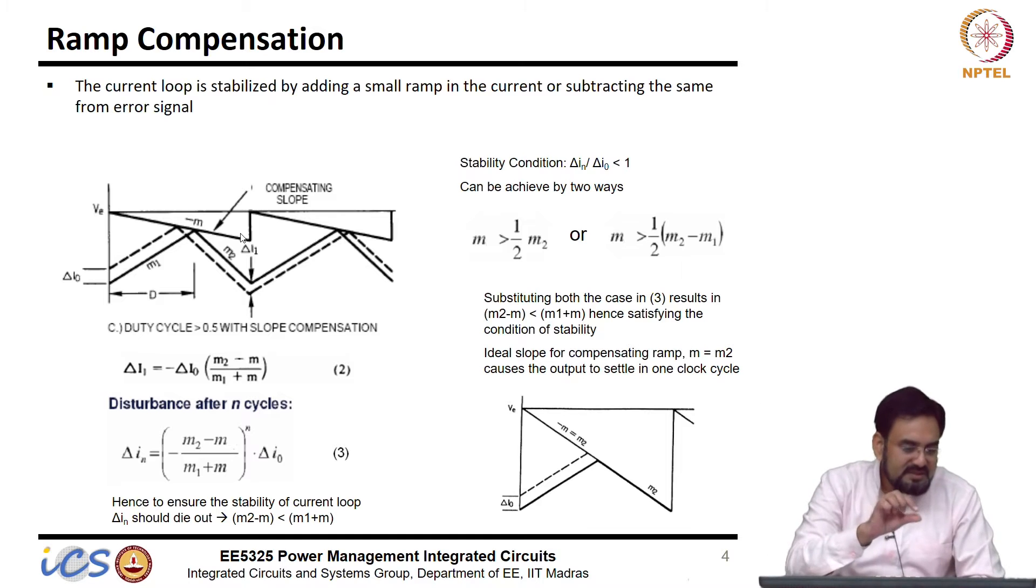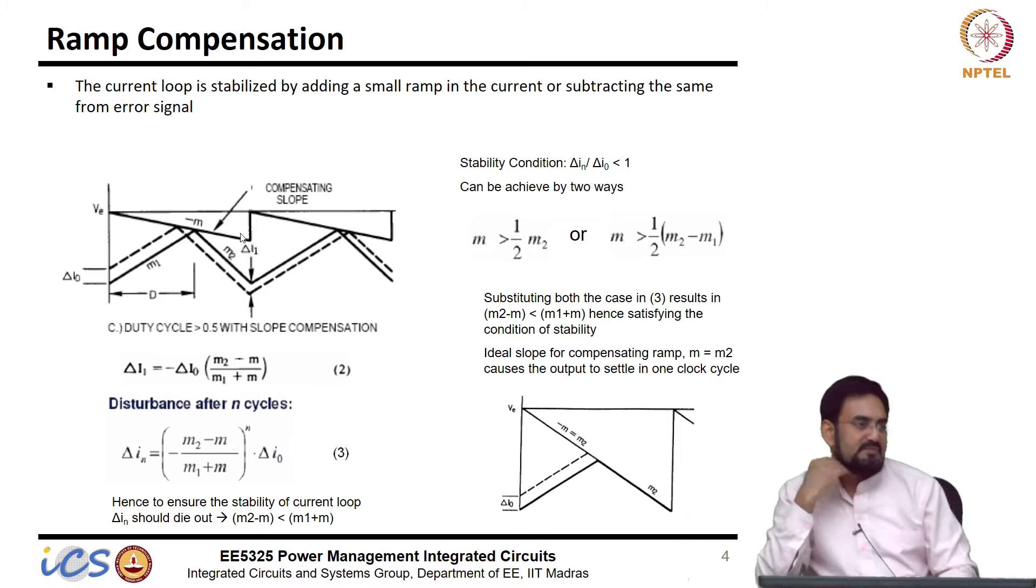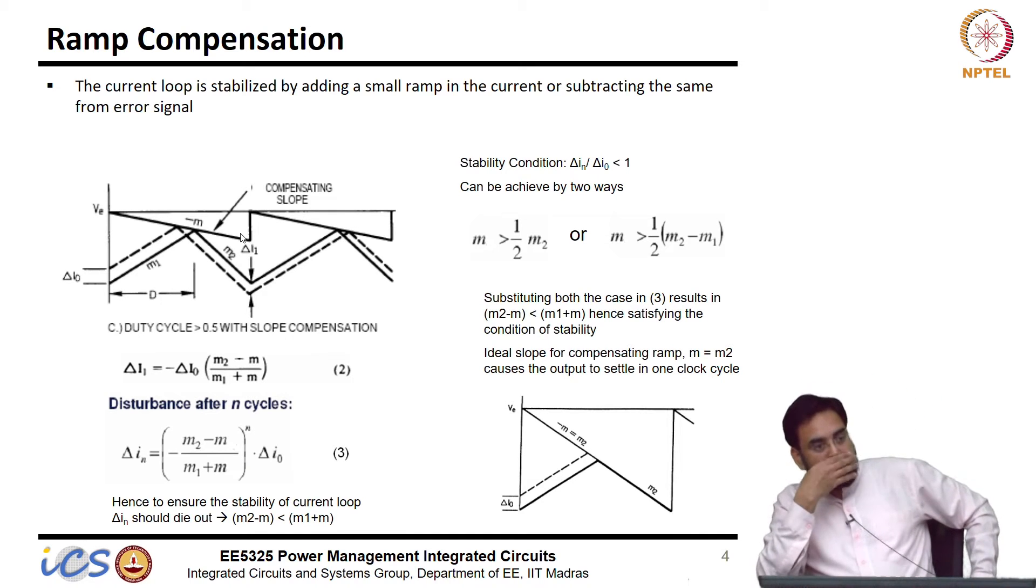The only thing is the amplitude of this cannot be much strong, why? If I make it strong what would happen? Peak current will reduce, average current can be low. Peak current will reduce, what will happen in that case? And then low current will change. No, no, your control voltage can adjust that, you have outer feedback.